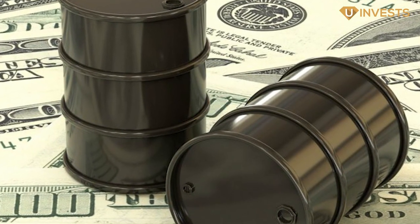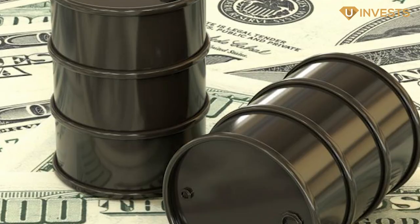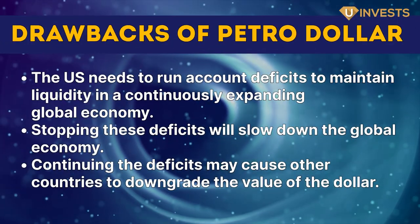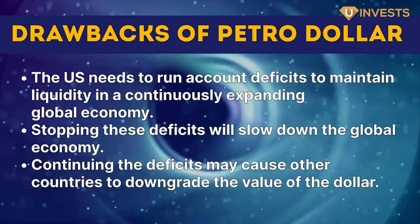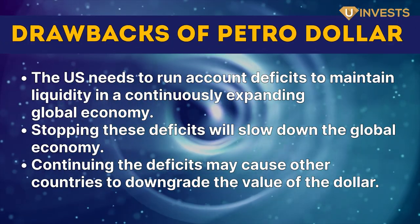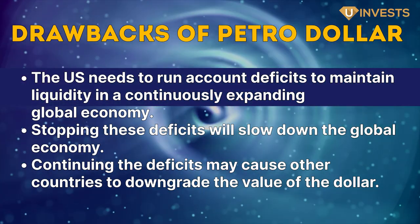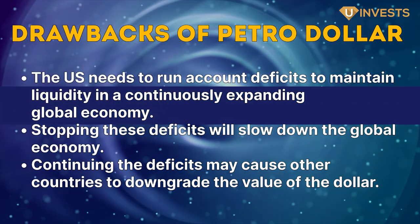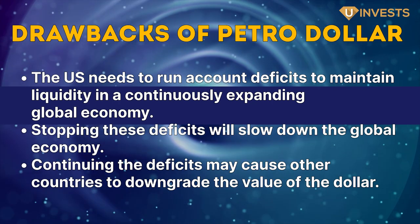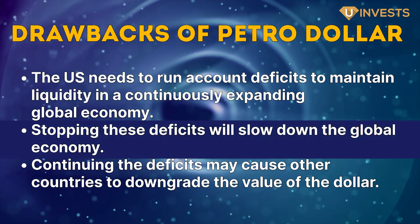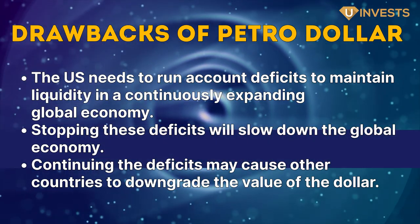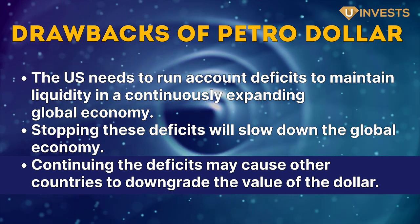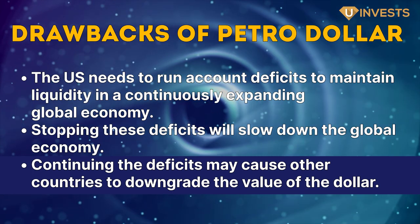The same elevated status for the U.S. dollar is also responsible for the downsides of the petrodollar system. The system results in a catch-22 for the U.S. dollar that could cause it to lose its status. The U.S. needs to run account deficits to maintain liquidity in a continuously expanding global economy. Stopping these deficits will slow down the global economy, while continuing them may cause other countries to downgrade the value of the dollar.